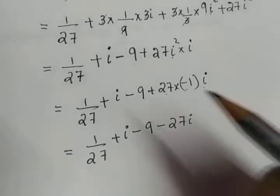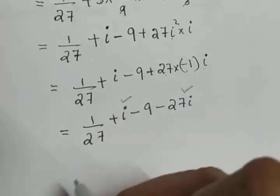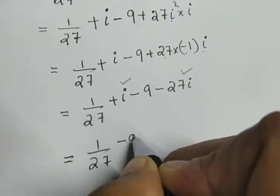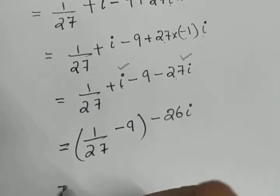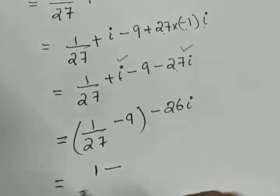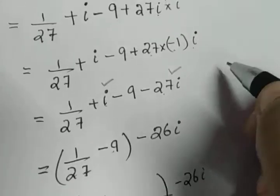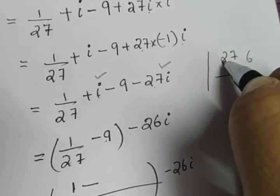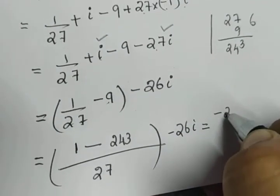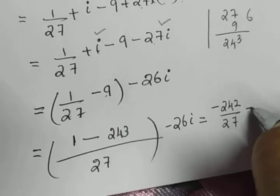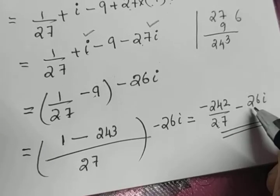Collect the i terms together and the terms without i. The i terms are i and minus 27i, which gives minus 26i. The terms without i are 1 by 27 minus 9. Taking the LCM of 27: that gives 1 minus 243 over 27, which equals minus 242 by 27. So the final answer is minus 242 by 27 minus 26i, which is of the form a plus ib where a is minus 242 by 27 and b is minus 26.